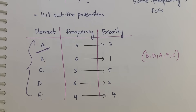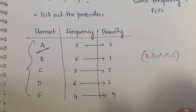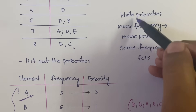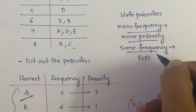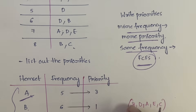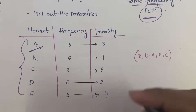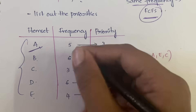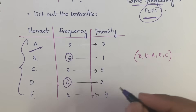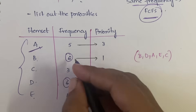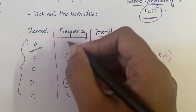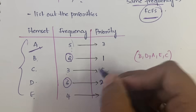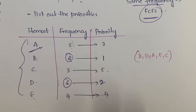After you write the frequency, you have to give the priorities. Which item has more frequency gets higher priority. If any two items have the same frequency, it is first come first serve basis. See here — the highest frequency is 6, and that belongs to two items, so first come first serve: B comes first so B gets priority 1, D gets priority 2.